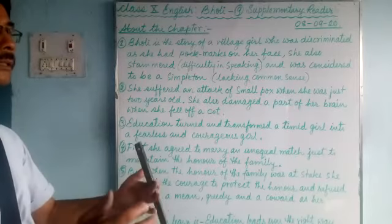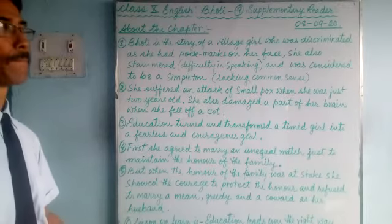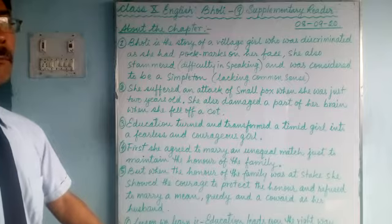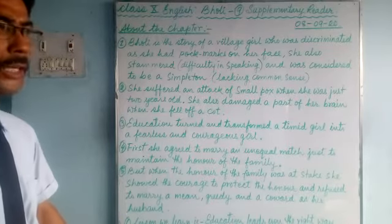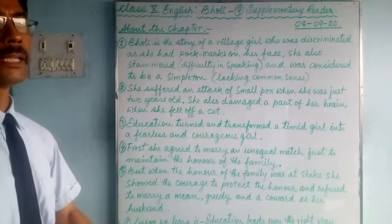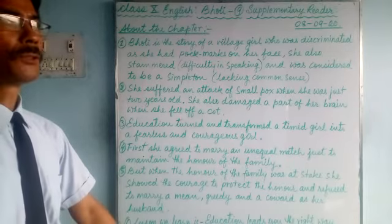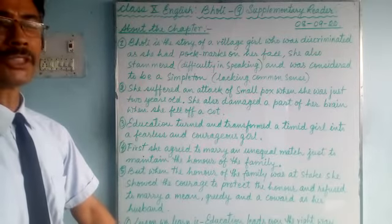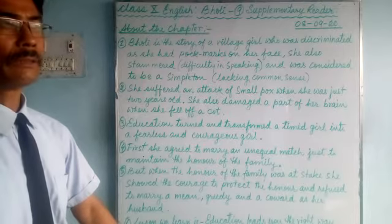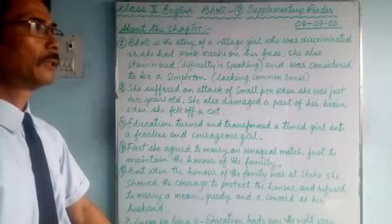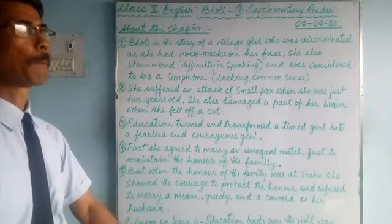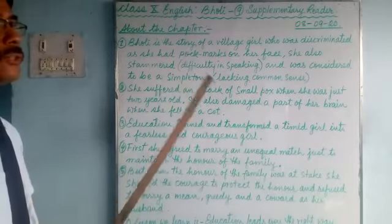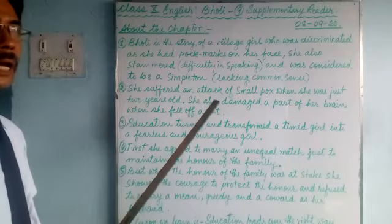So what is the chapter all about? It's about a young girl who was discriminated against by her family members, her colleagues, and her relatives — everybody discriminated against her. Because she had pock marks on her face, she used to stammer and never used to speak properly, and she was considered ugly.